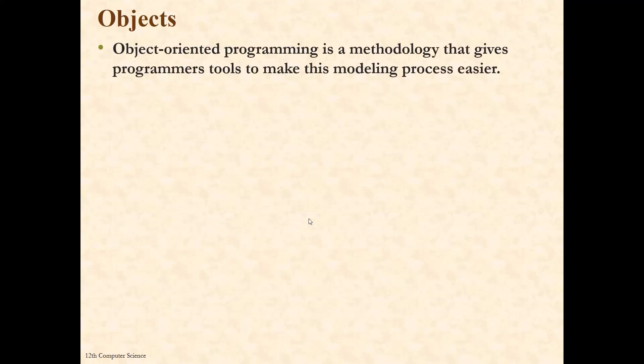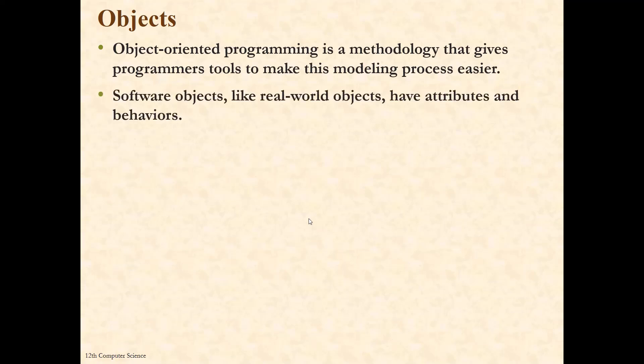Object-oriented programming is a methodology that gives programmers tools to make the modeling process easier. Because of a class, we can model and create objects. Software objects, like real-world objects, have attributes and behavior. Everything in this world is an object — humans are objects, animals are objects, a pen is an object, a laptop is an object, your mobile phone is an object. So like real-world objects, the software objects we create in object-oriented programming using C++ also have attributes and behavior. Every real-world object has attributes and behavior, and similarly software objects also have attributes and behavior.